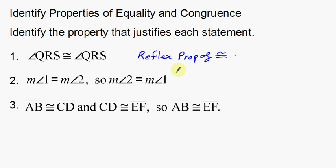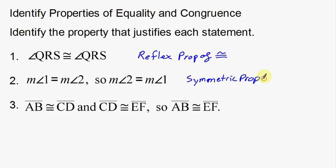Next example: the measure of angle 1 is equal to the measure of angle 2, so the measure of angle 2 is equal to the measure of angle 1. I'm flip-flopping the 1s and 2s, which looks like the symmetric property. Now, is this equality or congruency? I see equal signs throughout, so this is the symmetric property of equality.